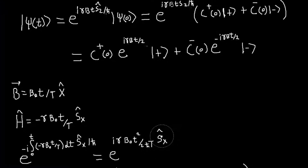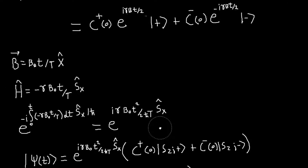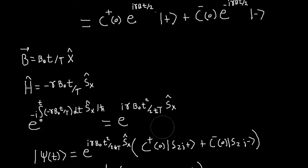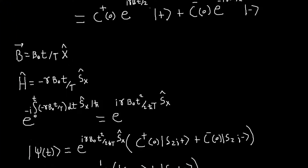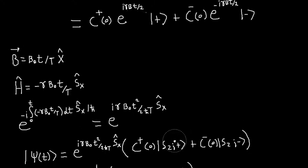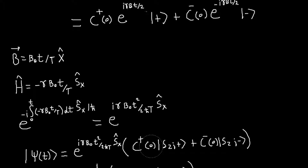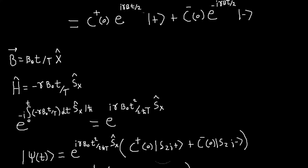So we have this, with Sx in the exponent. Let's say our initial state is still expanded in terms of our Sz eigenkets. Our state as a function of time will just be our time evolution operator applied to our initial state. We can't simplify yet, because we have a function of Sx, but our state is expanded in terms of the Sz kets. So I have to rewrite my state in terms of the Sx eigenkets, because then we'll know how this operator acts on those kets.